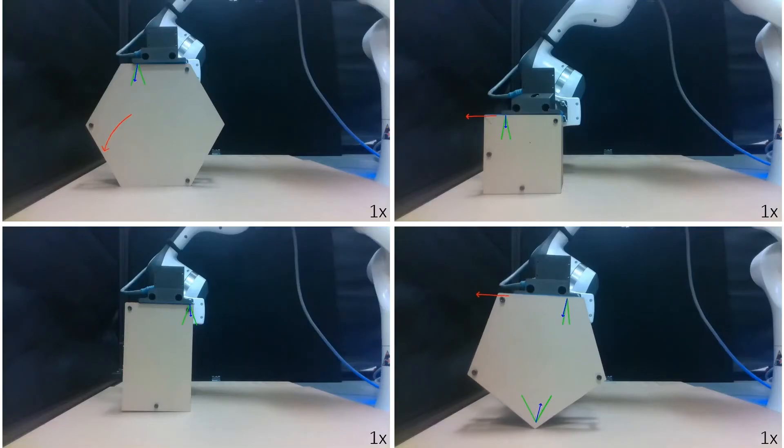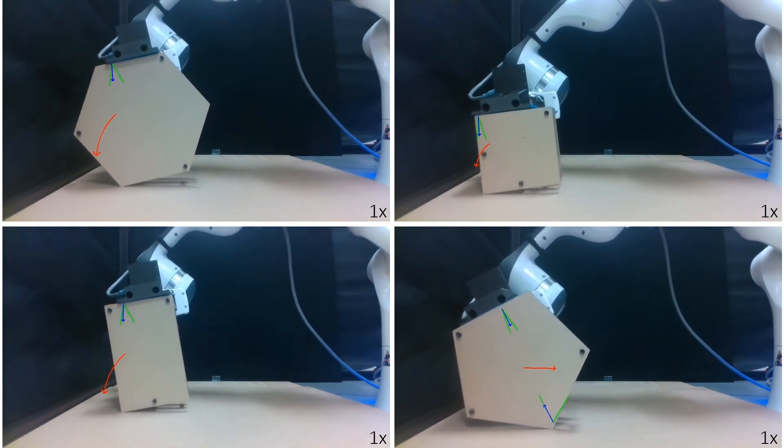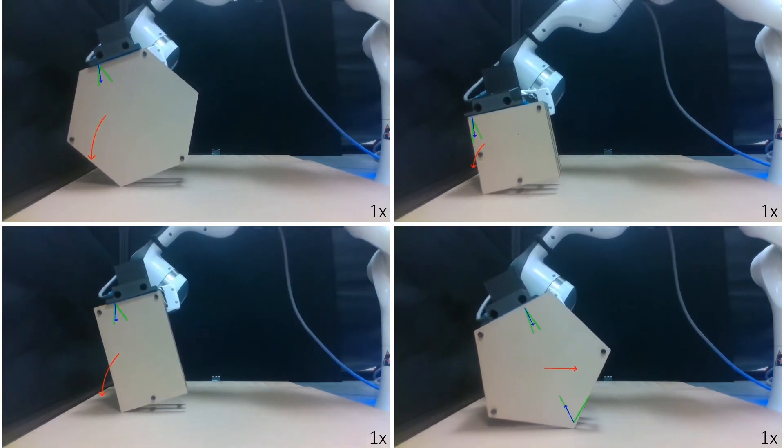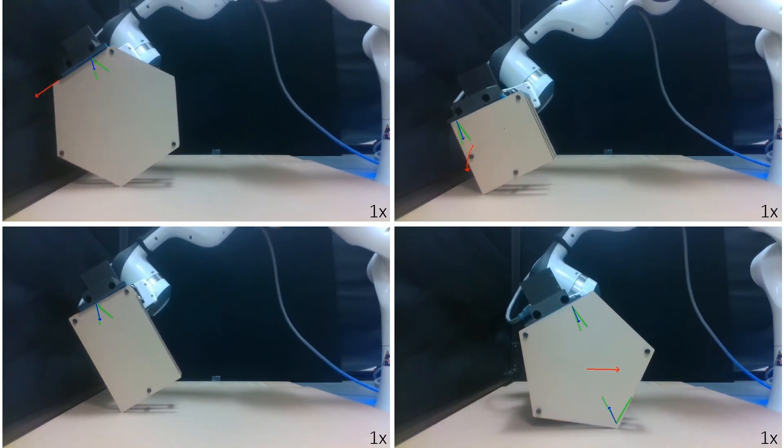We apply this framework to the problem of manipulating different polygons in the gravity plane. We find that the controller's ability to operate with naive pivot estimates allows us to manipulate even-sided polygons where the pivot location changes.